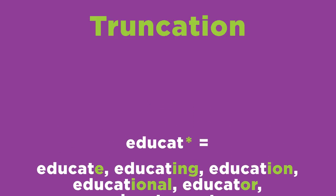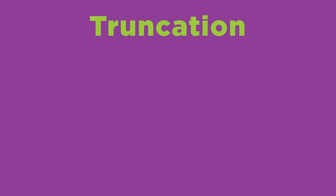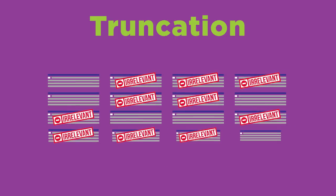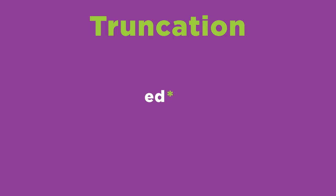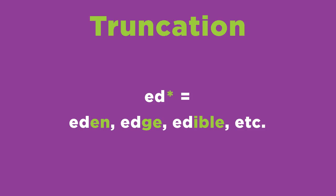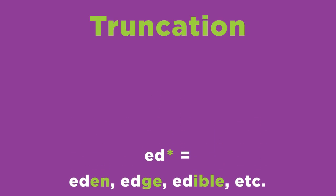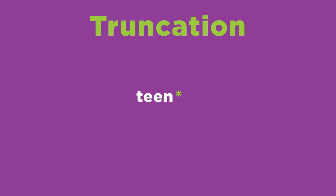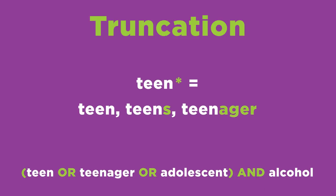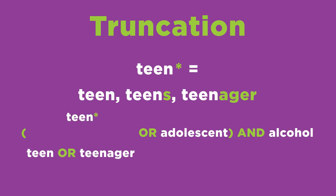Be careful not to truncate too early in the word — otherwise, you could end up with many results that are not helpful. If you searched for ed* instead of educat*, your results could include articles that have nothing to do with education, like ones about Eden, Edge, and Edible. In our earlier example, you could use teen* for teen, teens, and teenager. That means that the previous search string would become a simpler one using truncation.